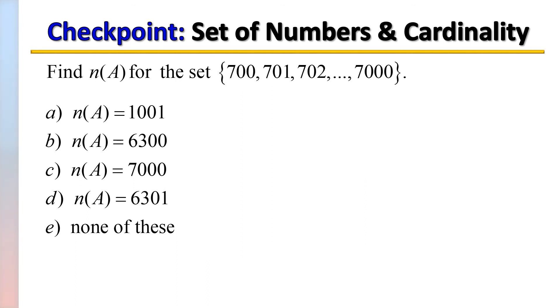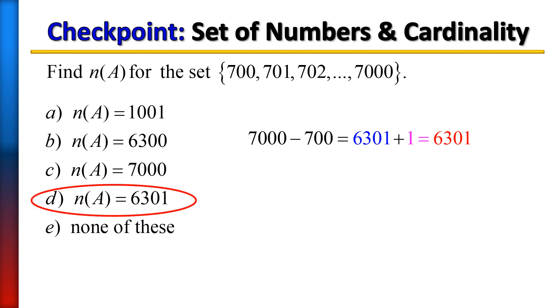And now we're at a checkpoint. I want to see how well you understand the concept on your own. So pause the video and see if you can find n(A) of the following given set. So recall to find the cardinal number of a set, and here we're given consecutive numbers. So all you need to do is take the first number and the last number and subtract the two, and then add one. That's it. So when we subtract the two, we get 6,301. Add one to that, and that gives us 6,301, which is choice D.